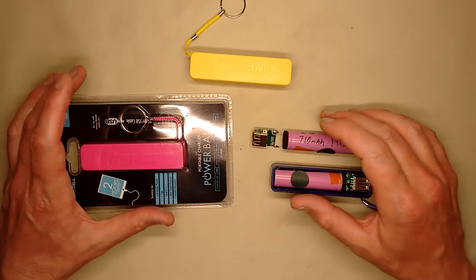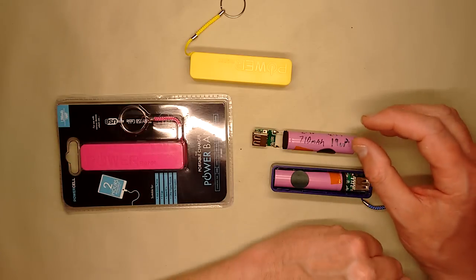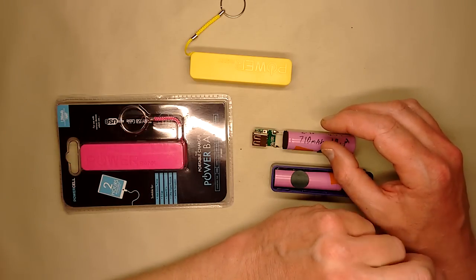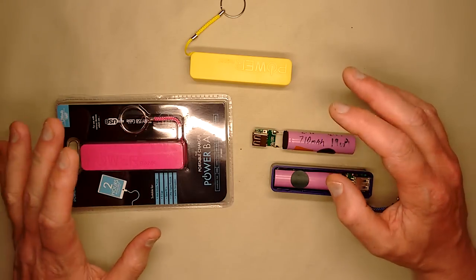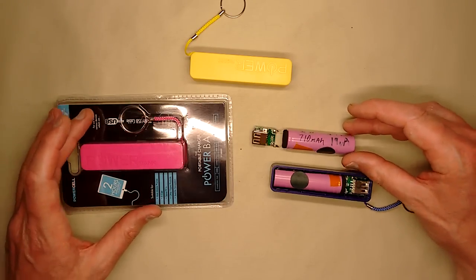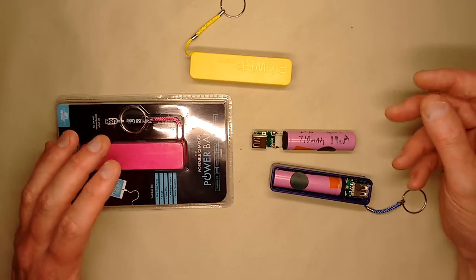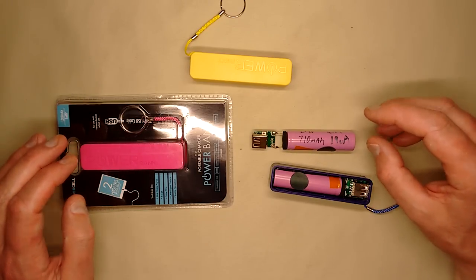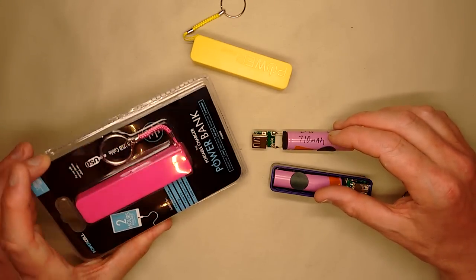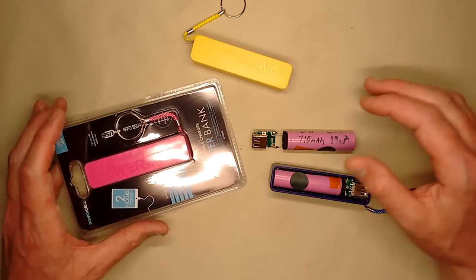A few of you have asked about the Pound World power banks. Pound World is the arch-nemesis of Poundland in the UK. It's another high-profile pound shop, which is the equivalent of a dollar store in America, but everything costs a pound instead. And that includes these little lithium power banks, which is quite surprising, you know, for a pound.